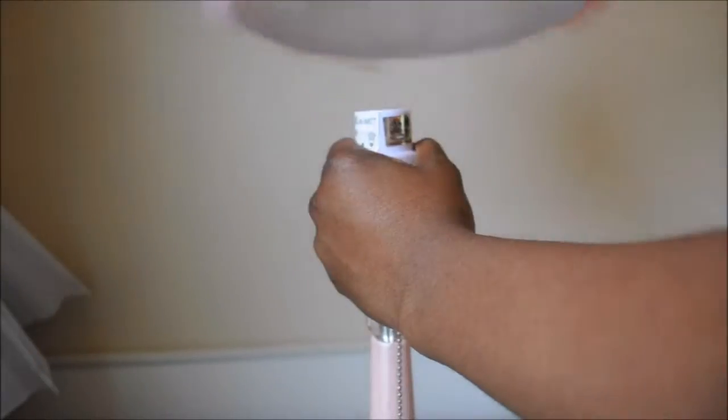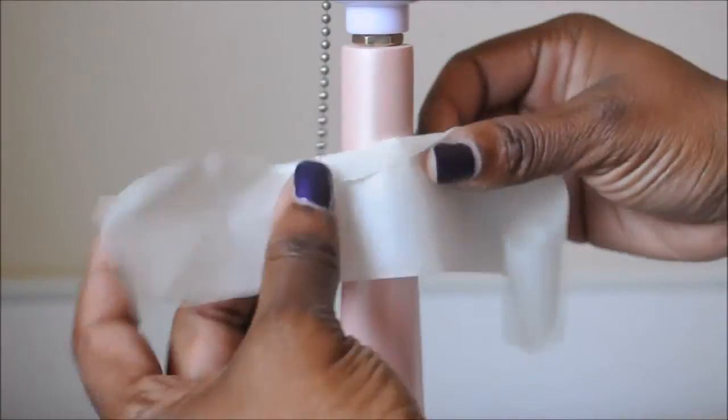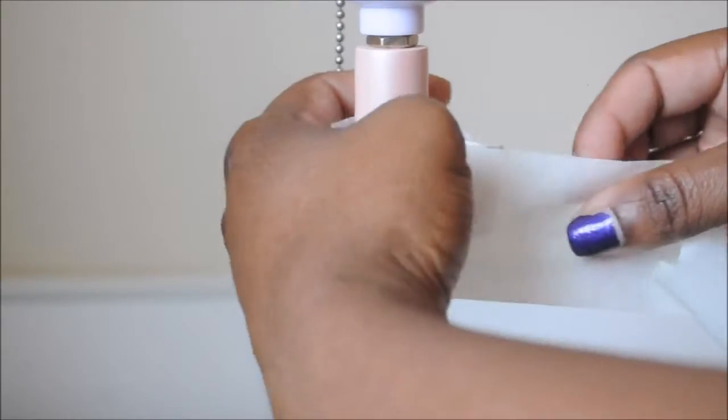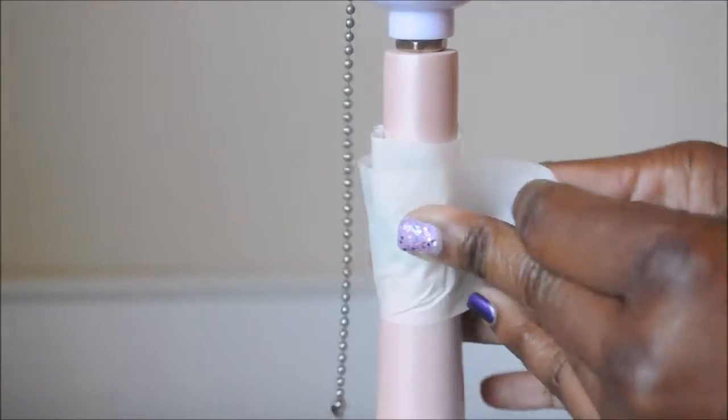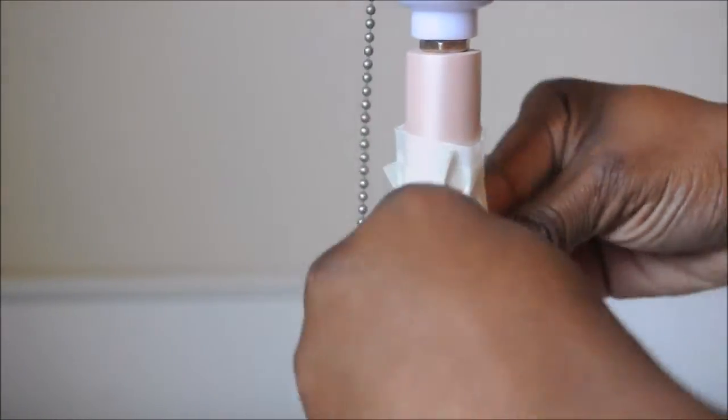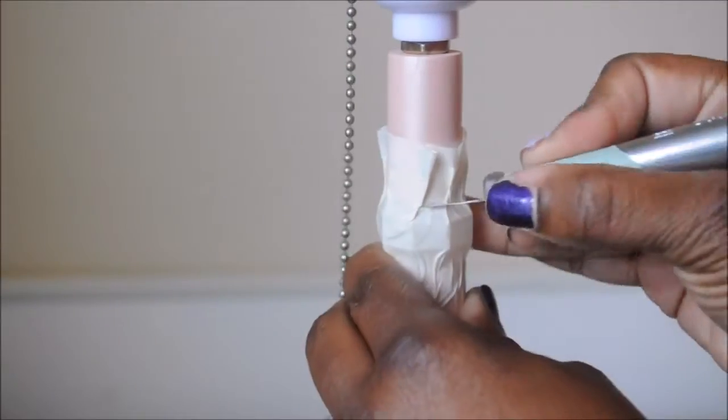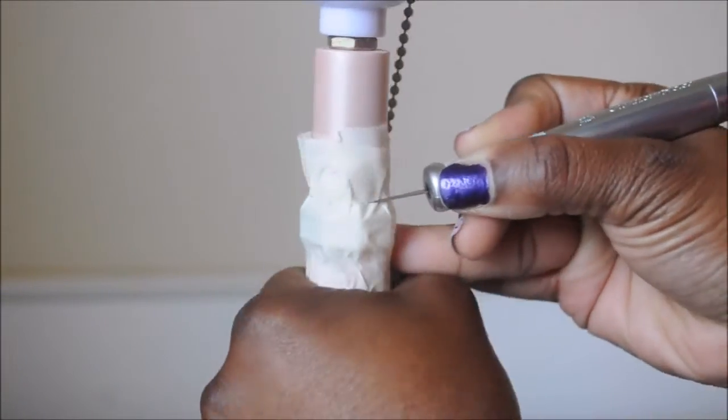So I just wiped everything down with a disinfectant wipe and removed the lampshade. And now I'm covering up the plastic crystal pieces so I don't get spray paint on them because I'm going to spray paint the base of this lamp.